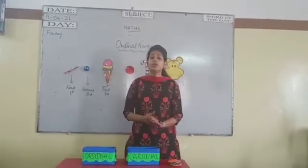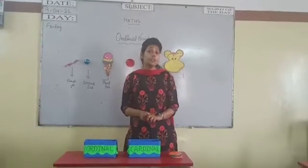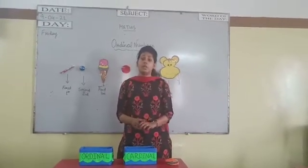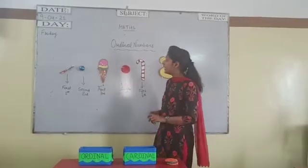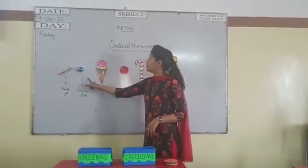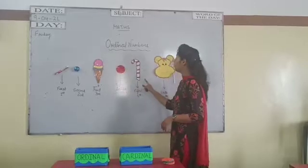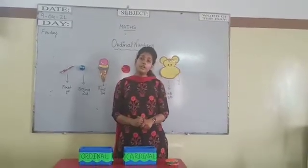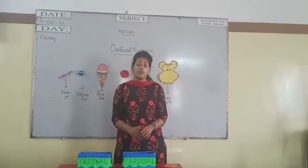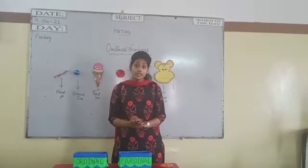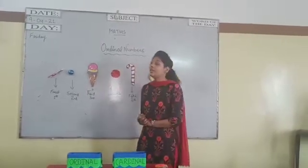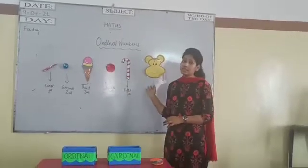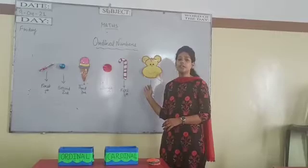Before I am going to explain ordinal numbers, first we will learn what are ordinal numbers. When we count things like 1, 2, 3, 4, 5, 6, those numbers are called counting numbers. Kids, when we get positions of different objects, those numbers are called ordinal numbers.